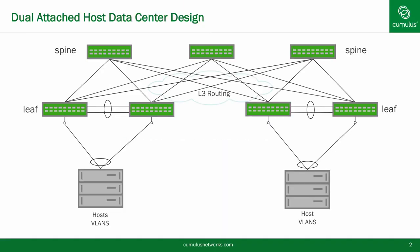This depicts a dual-attached host data center today, where Layer 3 routing is done between the spine and the leaves, but the connectivity of the host is still done via Layer 2, meaning MLAG and Spanning Tree is still in the environment. However, data centers are unifying, and whereas servers were good at automation with open-source tools, now network switches running Cumulus Linux are just as good at automation.